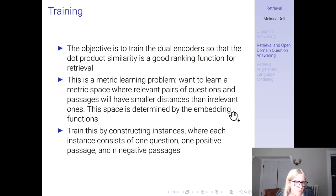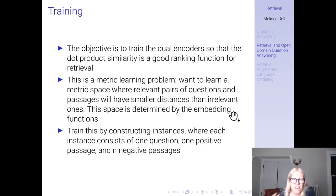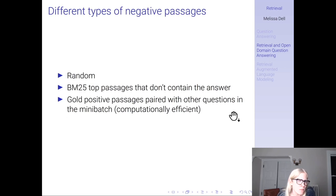In training the bi-encoder for retrieval, the objective is to train the encoder so that the dot product similarity is a good ranking function for retrieval. This is a metric learning problem: we want to learn a metric space where relevant pairs of questions and passages will have smaller distances than irrelevant ones. This space is determined by the embedding functions. We train this by constructing instances where each instance consists of one question, one positive passage containing the answer, and n negative passages.